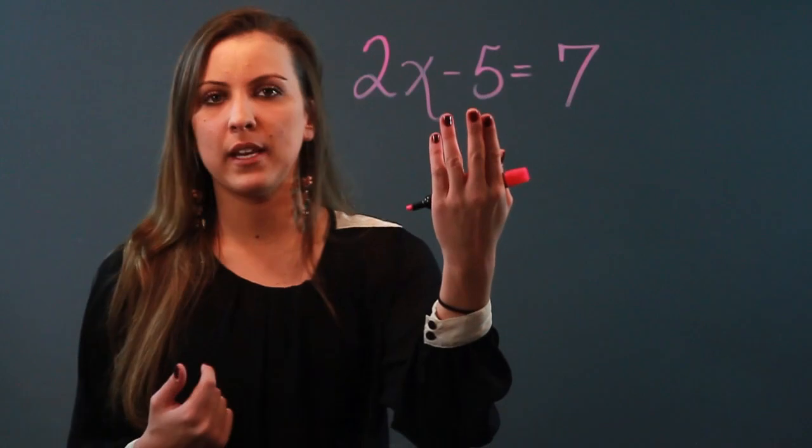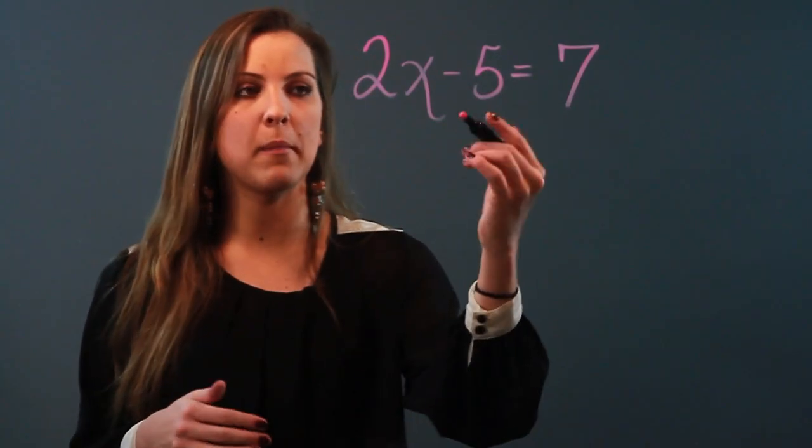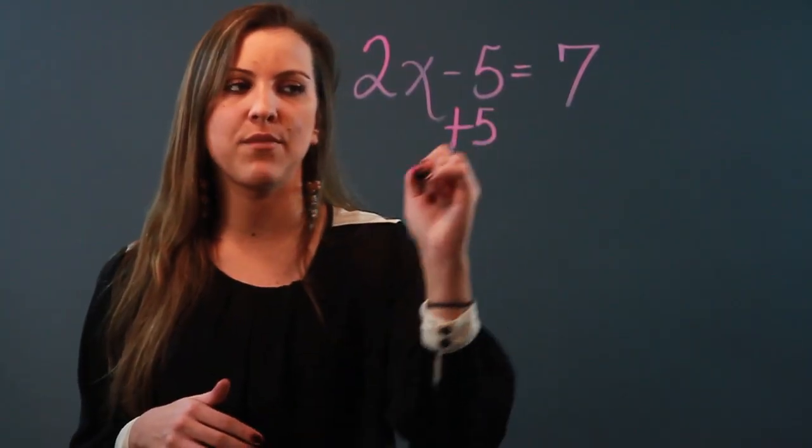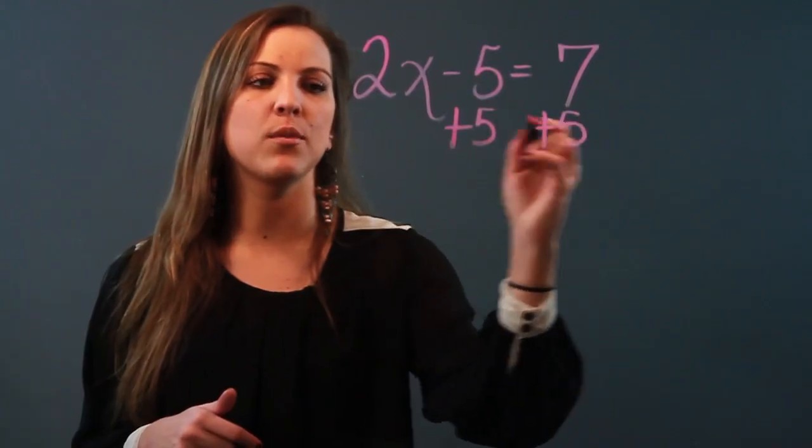So the only way for me to get rid of minus 5 is by doing the inverse operation or the opposite. The opposite of minus 5 is plus 5. But if I do plus 5 over here, I've also got to do plus 5 on the other side of the equal sign.